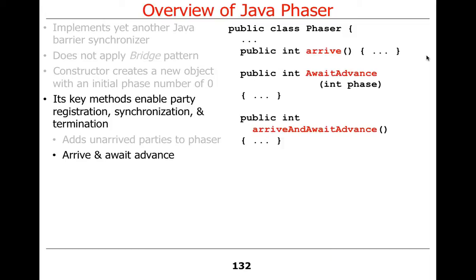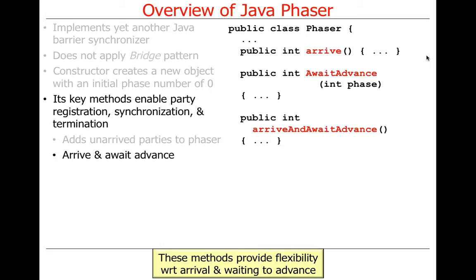The more interesting methods are the arrive and await advance methods. There are several because they separate the notion of arriving from the notion of waiting — completely unlike other synchronization mechanisms, which combine arriving and waiting. Barrier phasers allow you to arrive separately from waiting. The example I thought of: if you go to Disney World and want to do the Darth Vader exhibit, you get to duel with Darth Vader for an hour, and it's very popular.